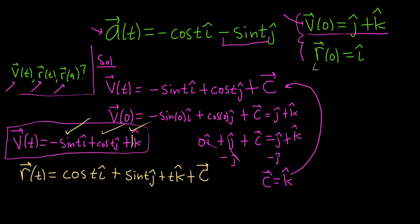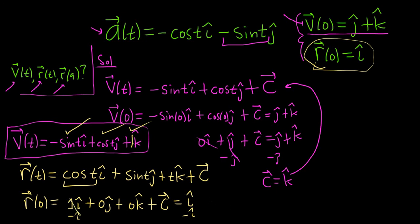Now we're going to use our last condition. So r of 0 equals i hat. So r of 0. Well, cosine of 0 is 1. So it's just going to be 1 i hat. Plus sine of 0 is 0. So it'll be 0 j hat. Then we get 0 k hat plus c. And that's equal to i hat. Oh, that's really nice. Because basically we just subtract i hat and it goes away. Everything else is 0. So we simply get c equals 0.